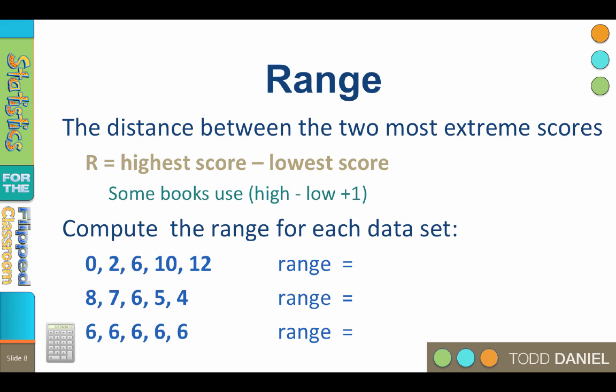Let's take a look at three data sets that we have seen before. You may remember that the mean of each of these small data sets is six. But now, let's look at the range. Take the high score and subtract the lowest score. What is the range for the first data set?